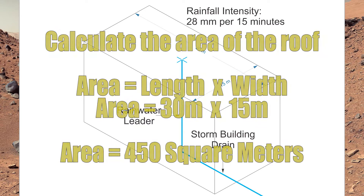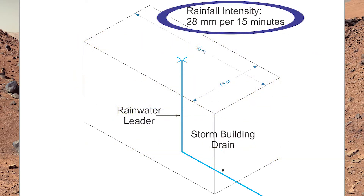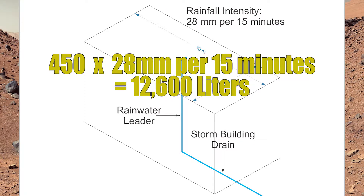Now I just need to take that number and multiply it by my rainfall intensity, which is 28 millimeters per 15 minutes. So 450 times 28 equals 12,600 liters of water.